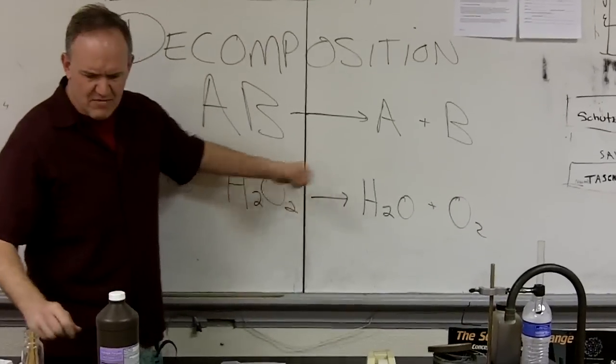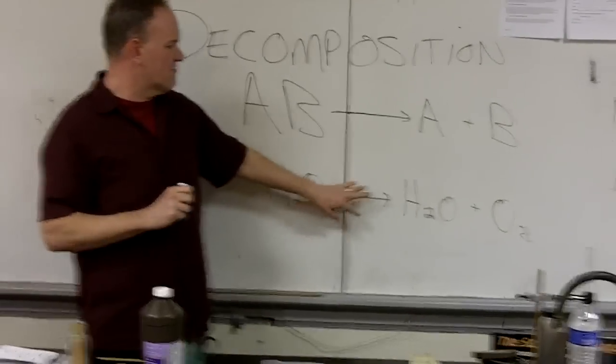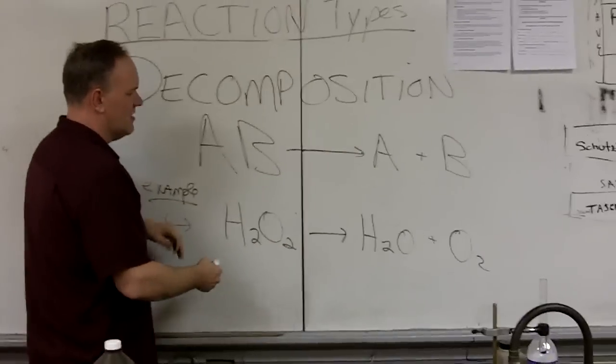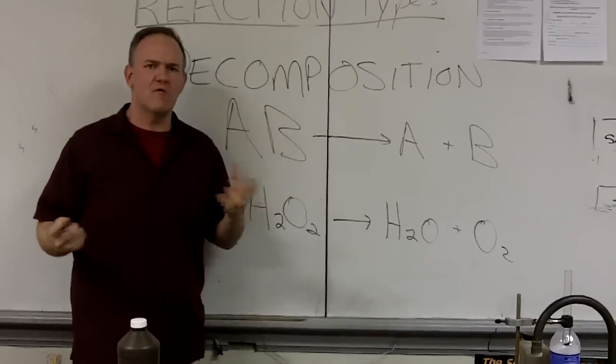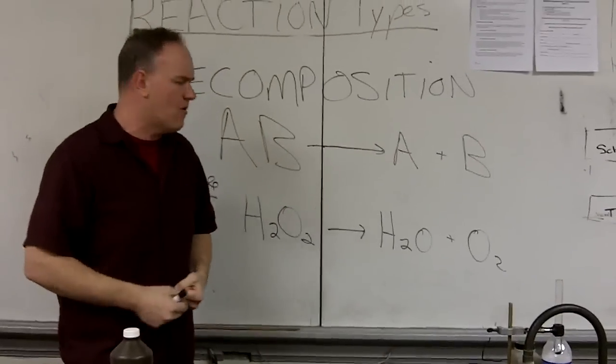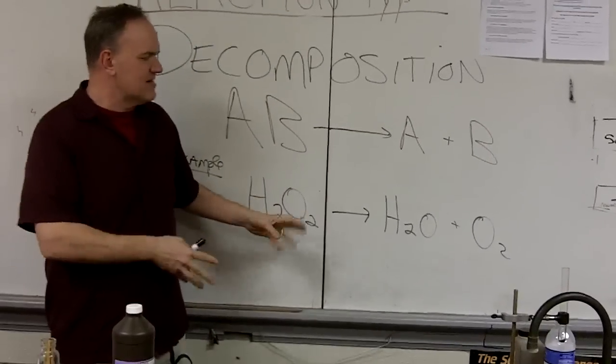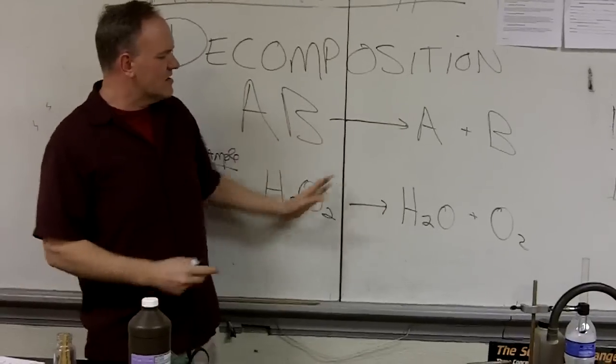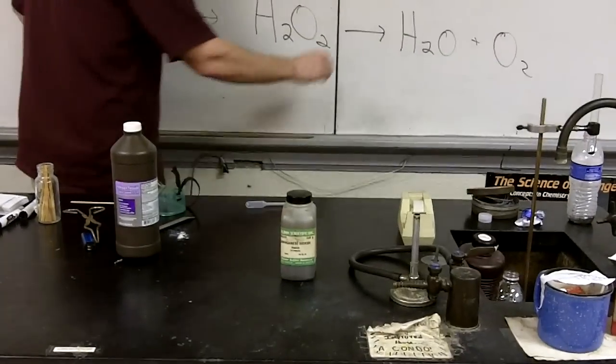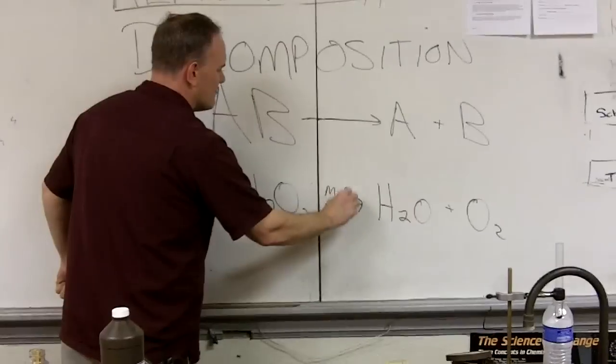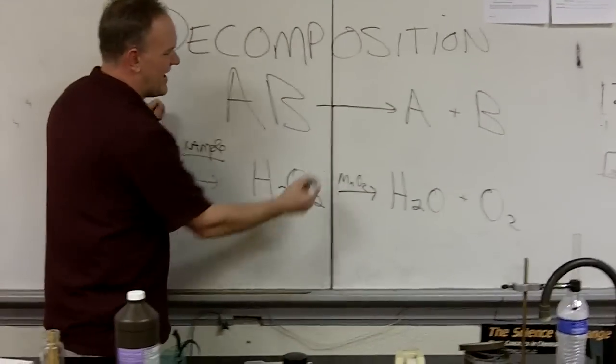This can be a little confusing because actually this reaction is a catalyzed reaction, which means that it'll happen if there's something there to make it go. You have to have something in here that's going to make it go. In our case, we're going to use manganese dioxide, the black powder, to make it go. It's not really part of the reaction, it's called a catalyst.